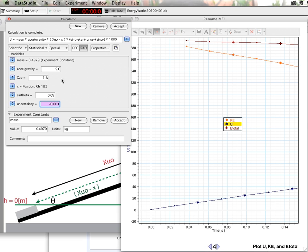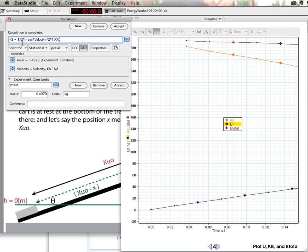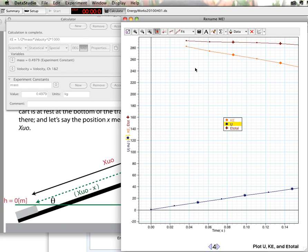Potential energy is based upon position. That's the variable from the motion sensor. All these other values are constants. If we look at kinetic energy, we have one-half mass velocity squared. Velocity is coming from channel one and two. But how do we get velocity?